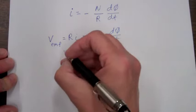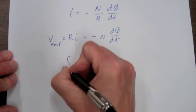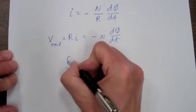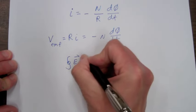So the total voltage drop around our circuit is the same as the integral of E dot dl around our circuit.